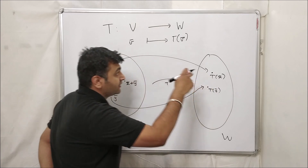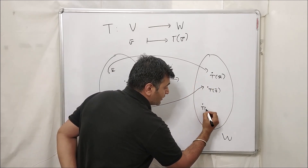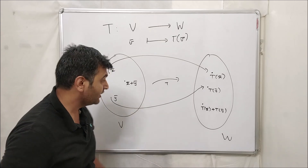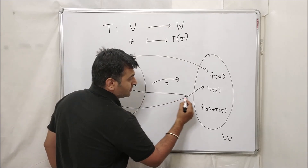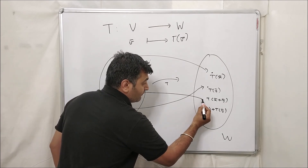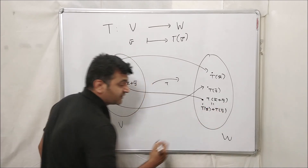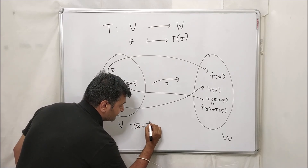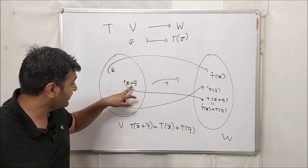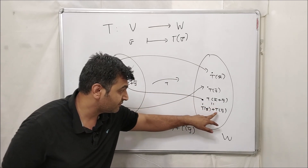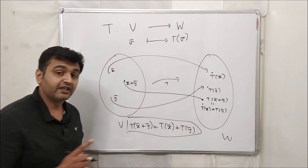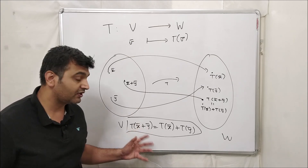Since T(x̄) and T(ȳ) are both in W, their sum T(x̄) + T(ȳ) is also in W because W is a vector space. Now look at the image of x̄ + ȳ, which is T(x̄ + ȳ). The first property for a linear transformation requires these two things to be equal: T(x̄ + ȳ) = T(x̄) + T(ȳ). This is called the vector addition property.